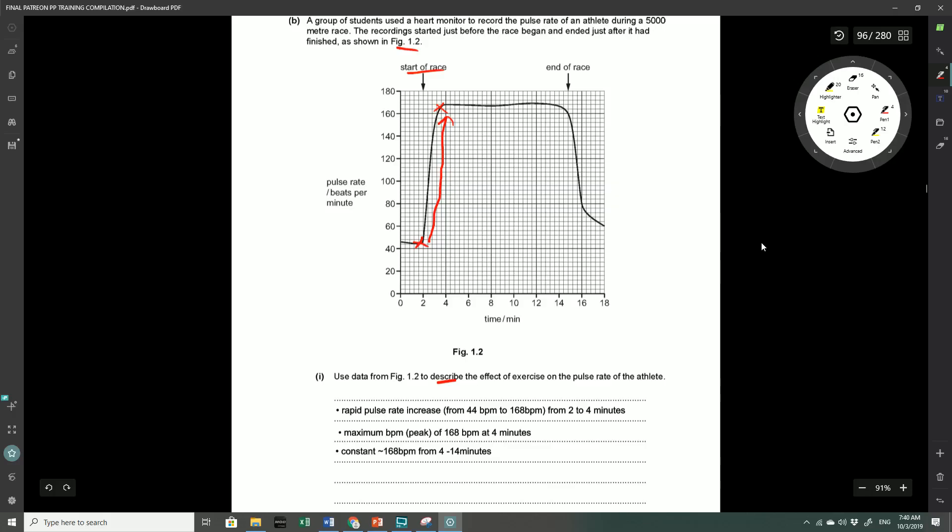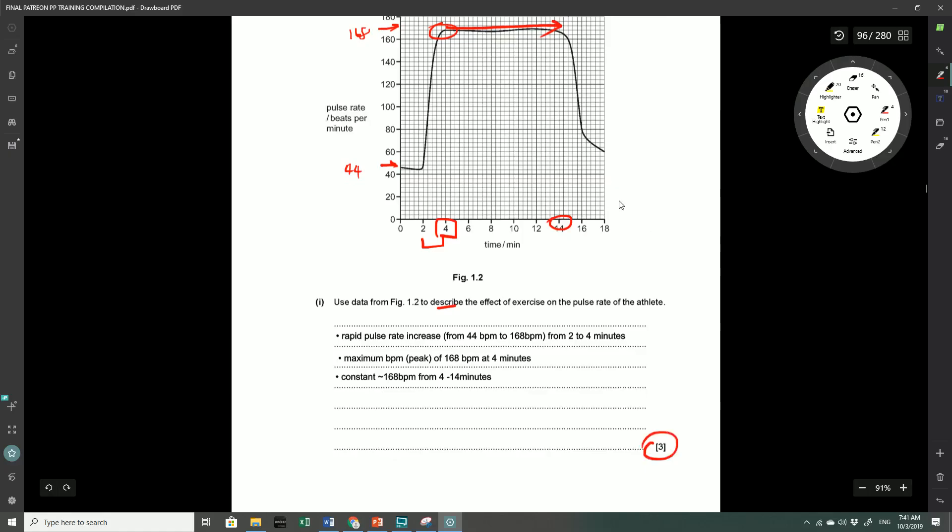The pulse rate increases rapidly over this period. That's the first part of the graph. Then you see this second part here where the heart rate or pulse rate remains constant. It starts to go down again, but that's irrelevant because the end of the race is at this point here. There are two main parts to this graph that you can describe: initially it goes up really rapidly and then it stays constant. What we would have said here is that there is a rapid pulse rate increase from around 44 beats per minute to around 168 beats per minute. That happens over the 2 minute to 4 minute mark. You could have also said that the peak of the graph sits at 168 beats per minute, occurring at the 4 minute mark, and it stays constant at around 168 beats per minute for the duration of 4 to 14 minutes. That's what I would have said and that's what was required to get an easy 3 marks in that question.